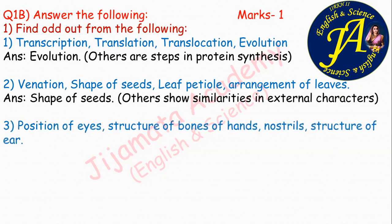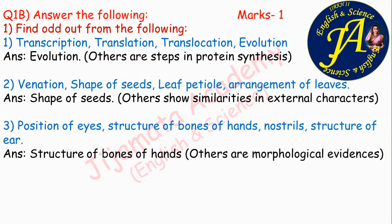The correct answer is structure of bones of hands, because it is anatomical evidence and all other three are morphological evidences — that is, they show similarities in their external characters.